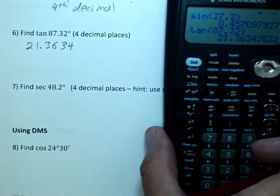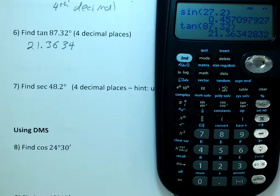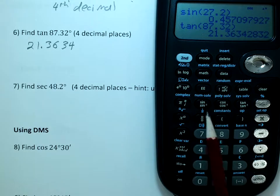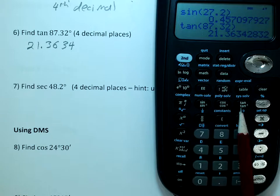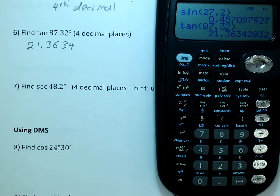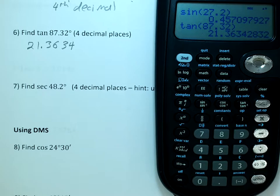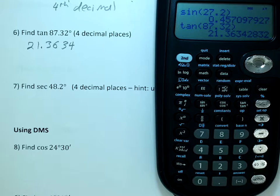Now the secant function — secant of 48.62 degrees. But looking here, you see you've only got sine, cosine, tangent, and their inverses. There's no secant button. So we have to use this identity: secant of an angle equals one over the cosine. We have a cosine button, so find the cosine and then take the reciprocal.